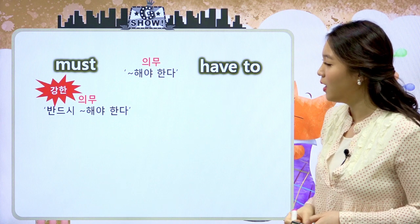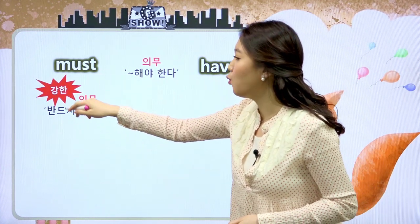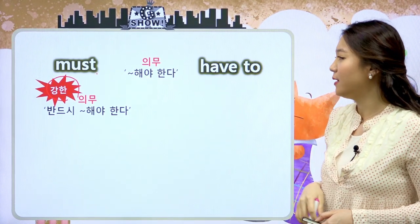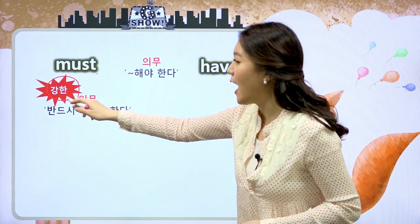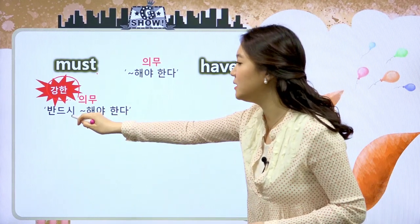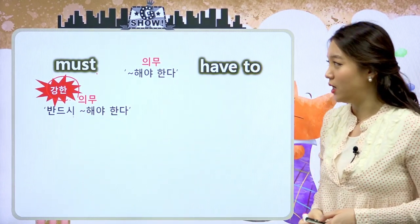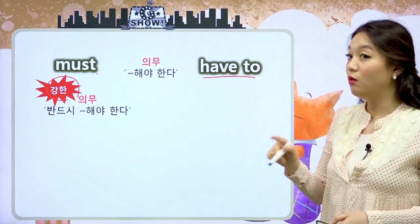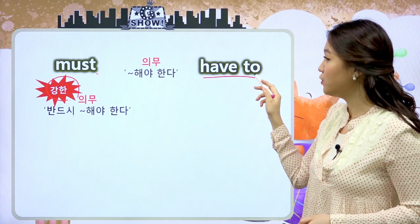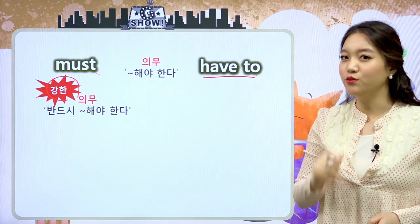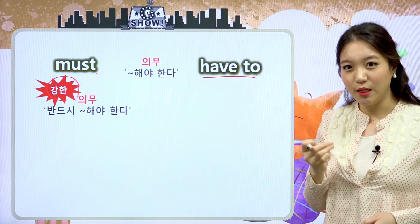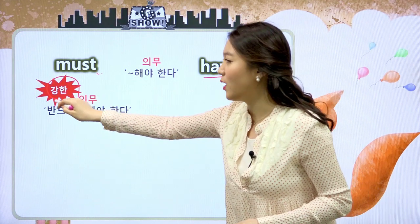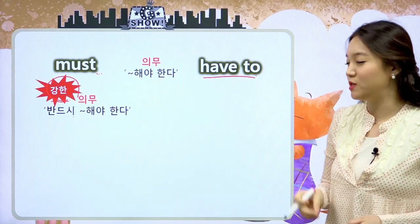must와 have to, 둘 다 뜻은 의무예요. 뭐뭐 해야 한다라는 뜻이에요. 차이점은 must가 조금 더 강한 의무라는 거예요. must도 해야 한다, have to도 해야 한다인데, must는 아주 강한 뜻을 나타내요. 그래서 반드시 뭐뭐 해야 한다라는 뜻이에요. must 대신 have to를 써도 되고, have to 대신 must를 넣어도 큰 문제는 없어요. 하지만 뉘앙스로 must가 들어간 것이 조금 더 강하게 느껴진다고 인식해주시면 돼요.